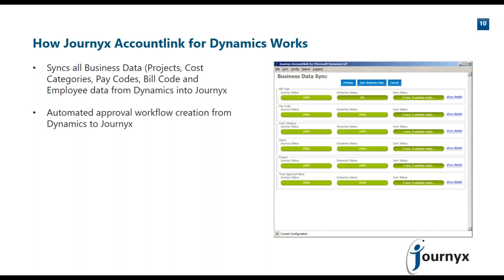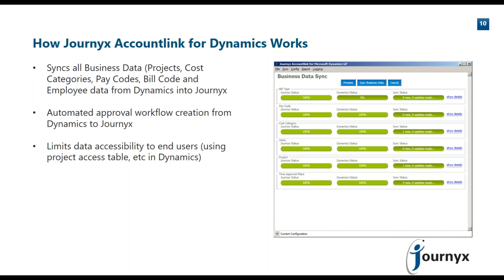Account Link also automates the creation of workflows you may have set up in Dynamics ERP — supporting multi-level workflows that are manager- and sheet-based, or even project-based approval workflows available within Journix. Through controls like GP project accounting access tables, we can limit which projects and cost categories people have access to within Journix so they don't track time against the wrong projects. Once time has been submitted through the workflow and approved, Account Link sends that approved time and expense data from Journix back into your Dynamics ERP solution for project cost accounting, billing to clients, and payroll processing.